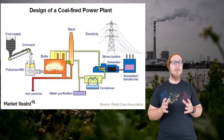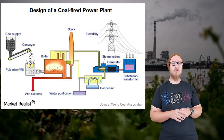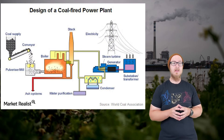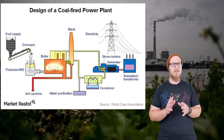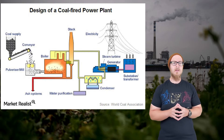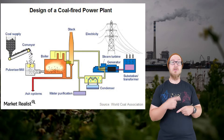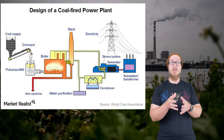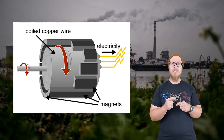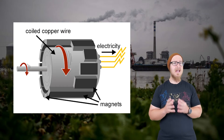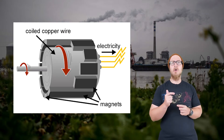We've already talked about mining, which is how we get the coal, so let's skip ahead to how we actually use it for electricity. Coal is combusted, which produces heat. That heat then boils water, which is why coal-fired power plants are generally always near some body of water. The steam then spins a turbine, which spins a generator. A generator uses magnets, and as it spins, the alternating magnetic field induces a flow of electrons.